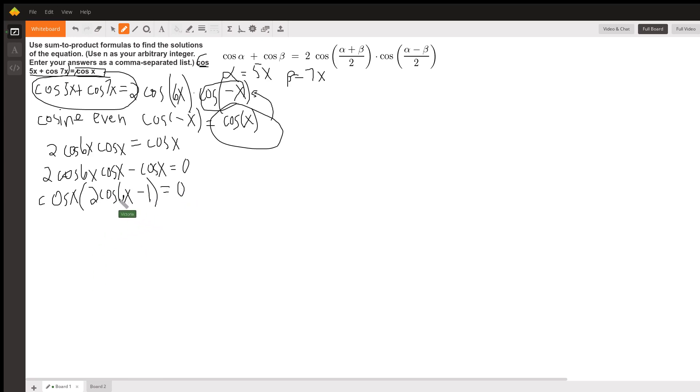So when we have 2 factors in algebra, we say either the first factor is 0, and cosine is 0 when x is 0. So that's one of our solutions. Or we could say that 2 times the cosine of 6x minus 1 equals 0. And so then we have 2 times the cosine of 6x equals 1. Divide both sides by 2.